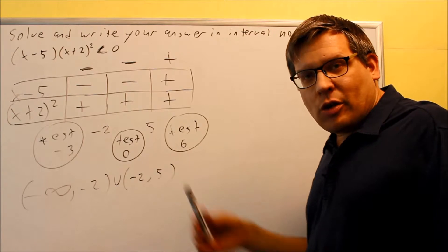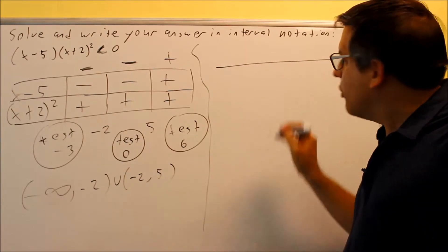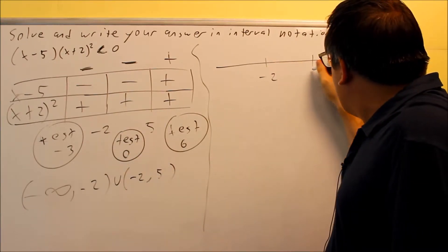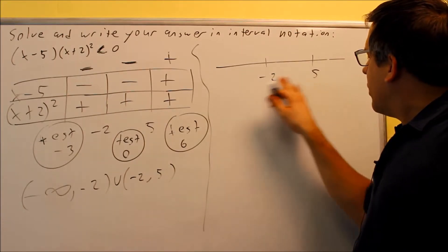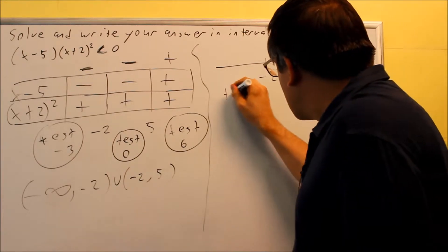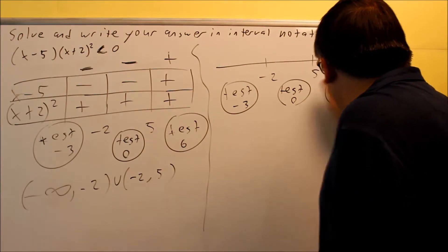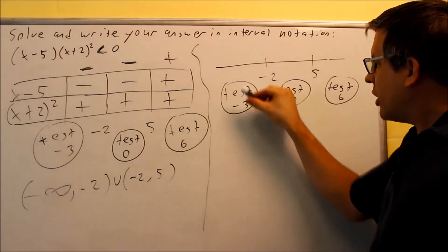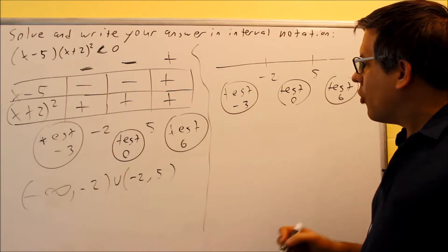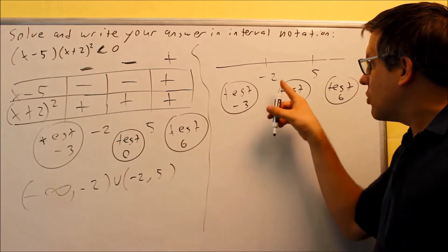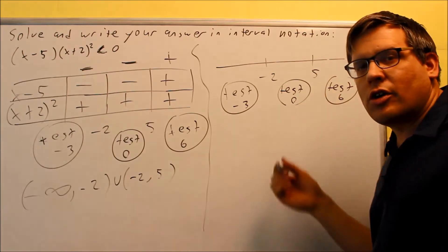If you don't like the table method, there's another method: the number line method. Draw a number line and place the critical values — negative 2 and 5 — on it. You still use test points: negative 3, 0, and 6. Circle and write the test numbers below the number line to distinguish them from the critical values, so you don't accidentally use the test number as an endpoint in your final interval.